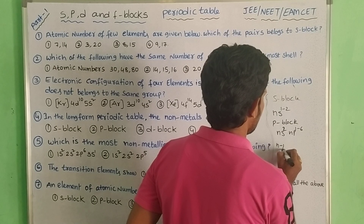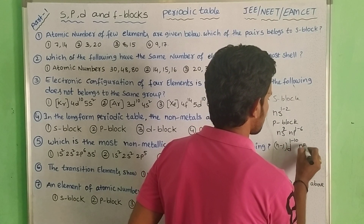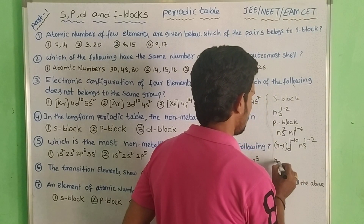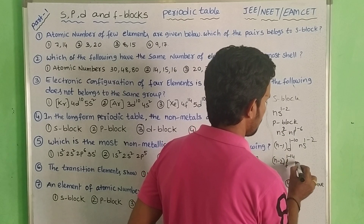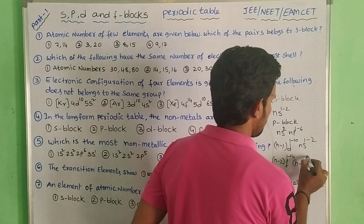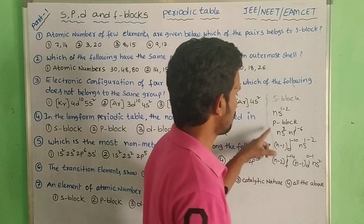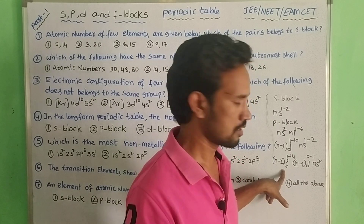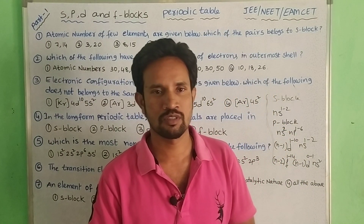D-block is (n-1)d 1-10, ns 1-2. That is F-block: (n-2)f 1-14, (n-1)d 0-1, ns2. So this is S-block, P-block, D-block and F-block electronic configurations. These electronic configurations are also a geometrical choice.